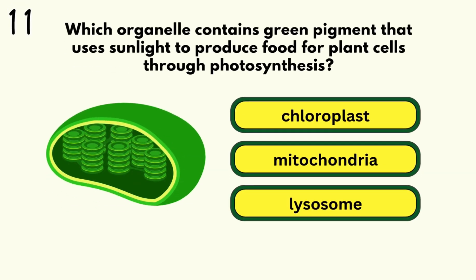Number 11. Which organelle contains a green pigment that uses sunlight to produce food for plant cells through photosynthesis? Chloroplast.